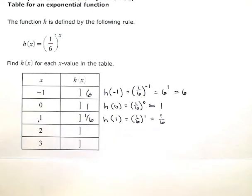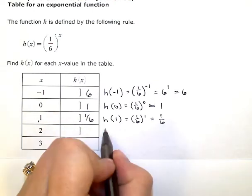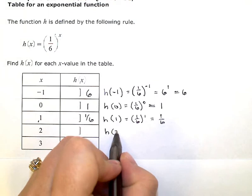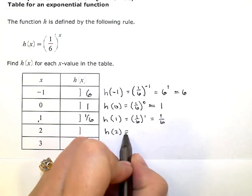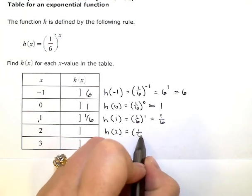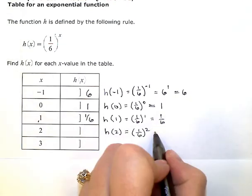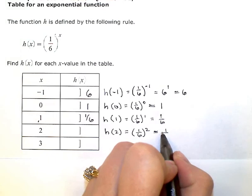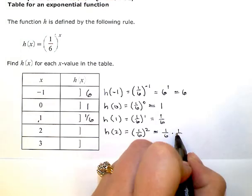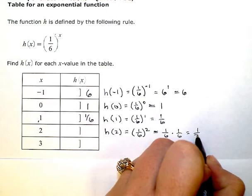Now we substitute 2. The function evaluated for x equals 2 is 1 sixth with an exponent of 2 — so 1 sixth squared, which is 1 sixth times 1 sixth, which is 1 over 36.